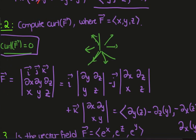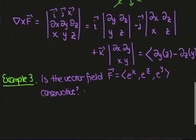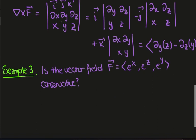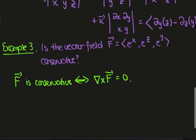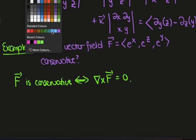Let's look at one more example. We want to know if the vector field given by (e^x, e^z, e^y) is conservative. We need to recall the fact that, assuming everything is on a simply connected region such as R3, F-hat is conservative if and only if the curl of this vector field is zero.